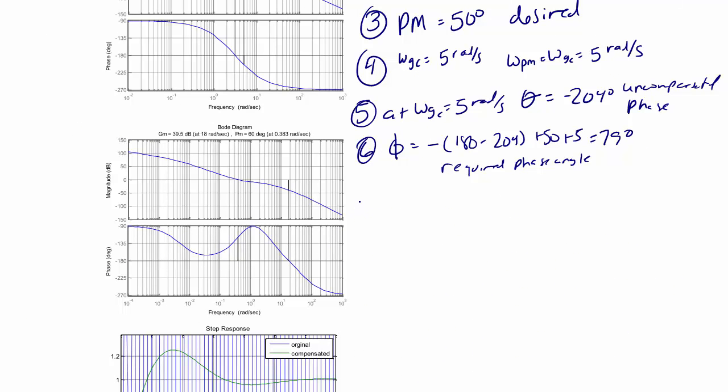Step seven is to calculate beta from phi. So beta is equal to 1 plus sine phi over 1 minus sine phi. So beta is equal to 107.856.